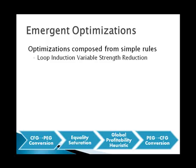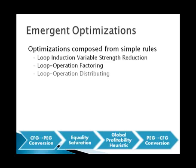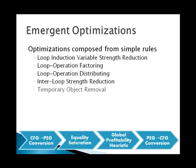This pattern of advanced optimizations emerging from simple rules is quite common with our approach, so we call them emergent optimizations. Loop induction variable strength reduction is only one of many. We never had to explicitly code these optimizations. So for no additional effort, we produced many advanced classical optimizations, as well as many non-classical optimizations not found in traditional compilers.